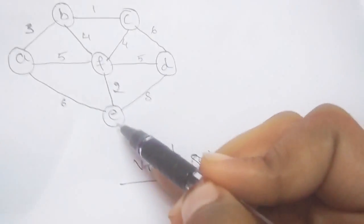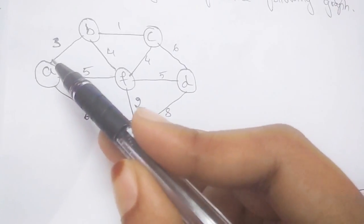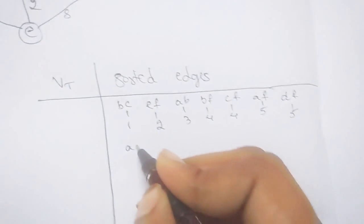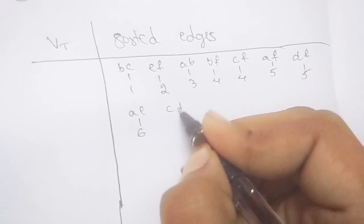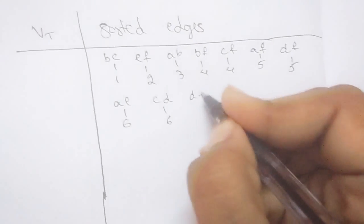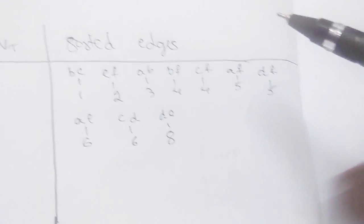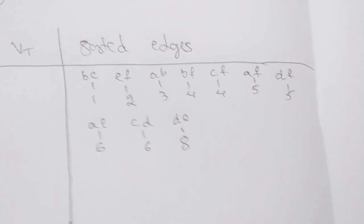Next are AE and CD, both with weight 6. In alphabetical order, we take AE first, then CD. After that we have DE with weight 8. So all edges are now arranged in ascending order of their weights — this completes the first step.